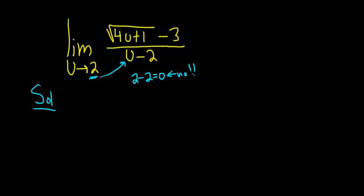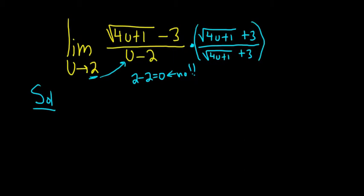The trick is we're going to multiply by the conjugate. So we're going to multiply the numerator by the square root of 4u plus 1 plus 3. Then we'll do the same thing on the bottom. And what we're basically doing is multiplying by 1.